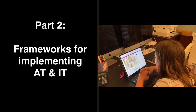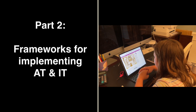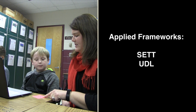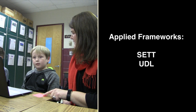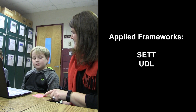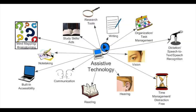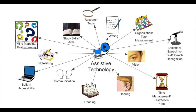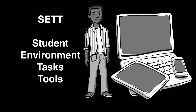Part 2: Frameworks for Implementing AT and IT. In Part 2, we briefly discuss two applied frameworks to guide practitioners and families in their selection and implementation of AT and IT: the SET Framework and Universal Design for Learning. When faced with determining devices, services, and other supports needed by a student, many teams across the country and world have found the SET Framework to be helpful. SET is an acronym for Student, Environments, Tasks, and Tools.